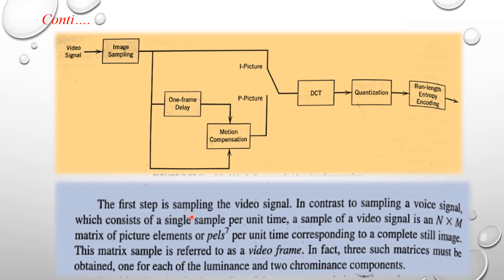The first step is sampling the video signals. In contrast to sampling an audio signal which consists of a signal sample per unit time, a sample of the video signal is an N into M matrix, rows and columns matrix of picture elements or pixels per unit time corresponding to a complete still image. The matrix sample is referenced as a video frame. In fact three such matrices must be obtained: one for luminance and two for chrominance components.